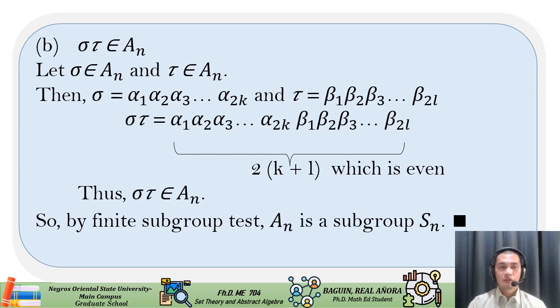Now, let's have part B: sigma tau is in A sub n. Let sigma is in A sub n and tau is in A sub n. Because they are even permutations, that means that each one of them can be written as a product of even number of transpositions.